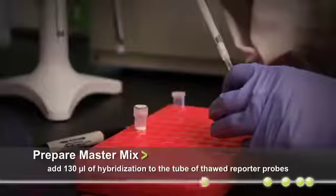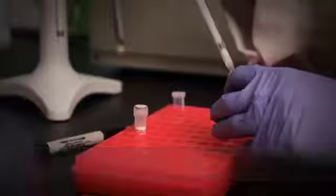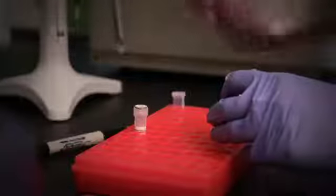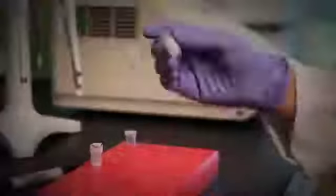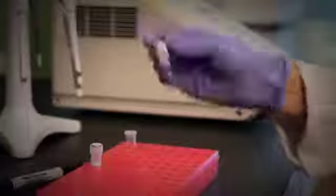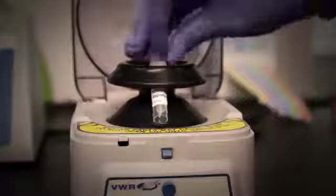We recommend adding the hybridization buffer directly to the tube of reporter probes to eliminate transfer losses of reporter probes into subsequent tubes. Mix gently by repeatedly inverting the tube and then spin it down in the picofuge to collect everything down to the bottom of the tube.